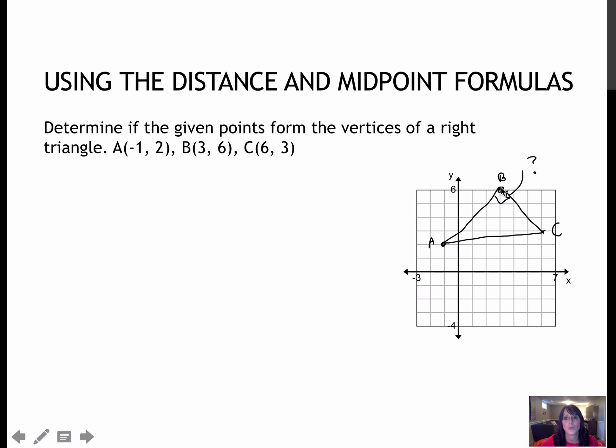In order to check that, I would have to use the Pythagorean theorem. But first, I would have to find each of the distances. I'm going to find the distance from A to B, which would be (-1 - 3)² plus (2 - 6)², which gives me 16 plus 16, which would be radical 32, which I would then turn into 4 radical 2. So AB is 4 radical 2.